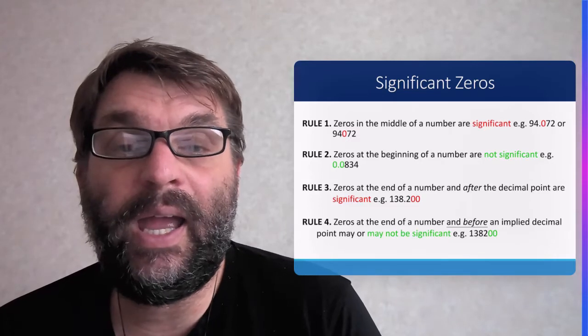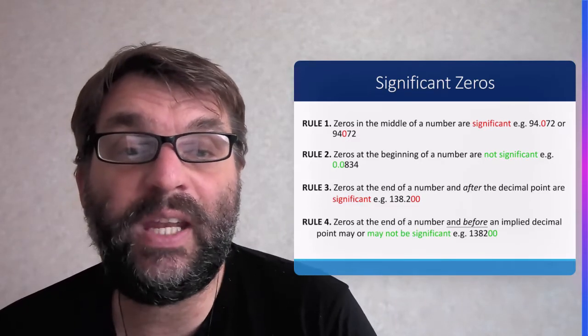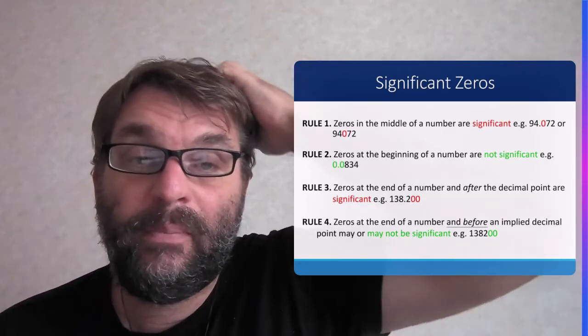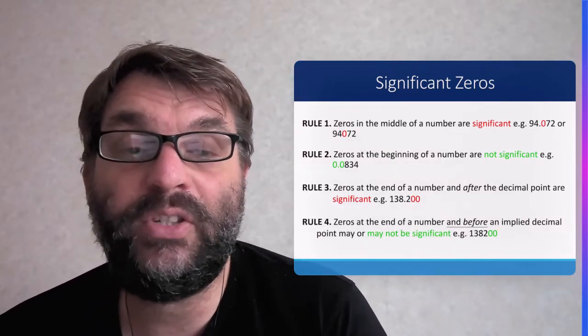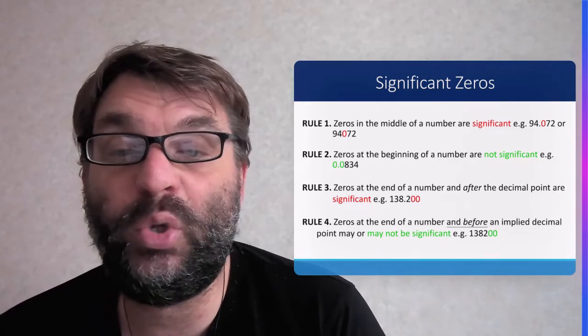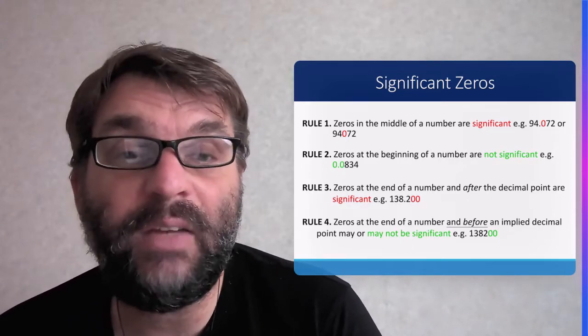The third rule is that zeros at the end of the number and after the decimal point are indeed significant. So there's the example there of 138.200, those are significant.